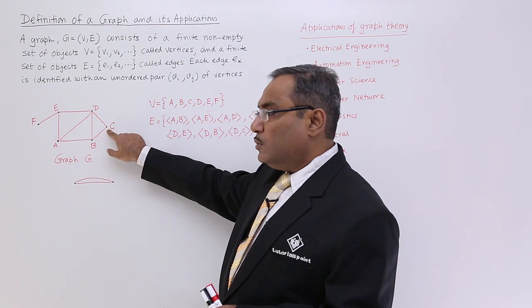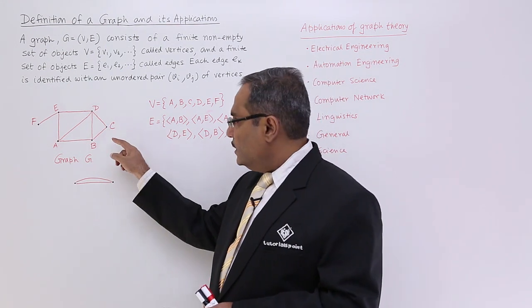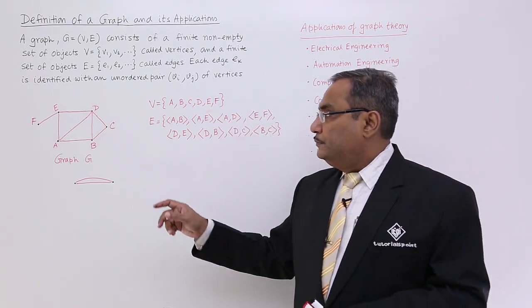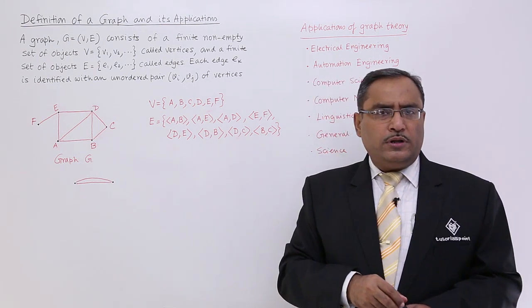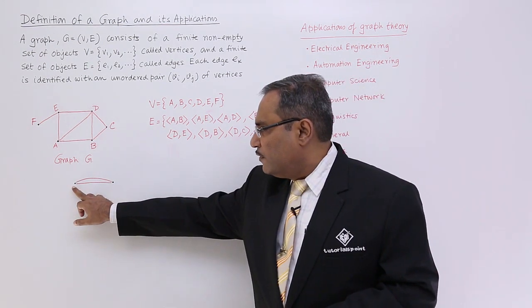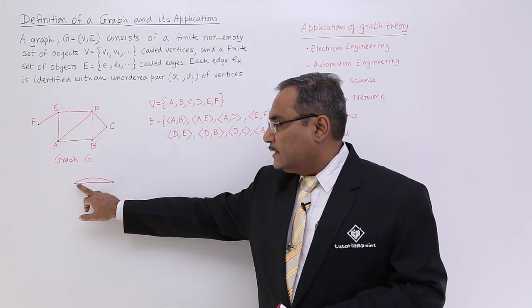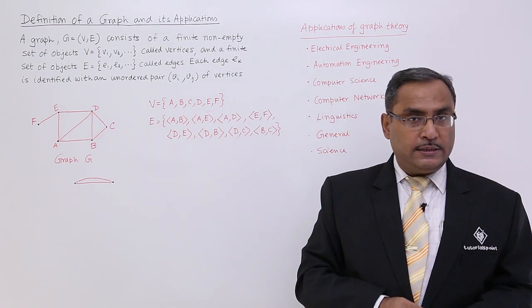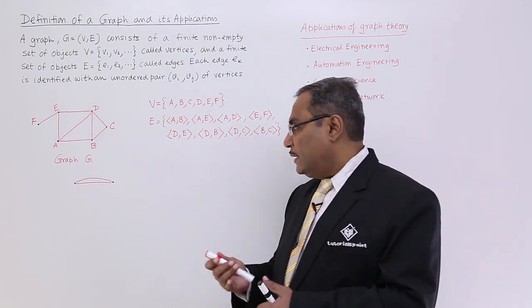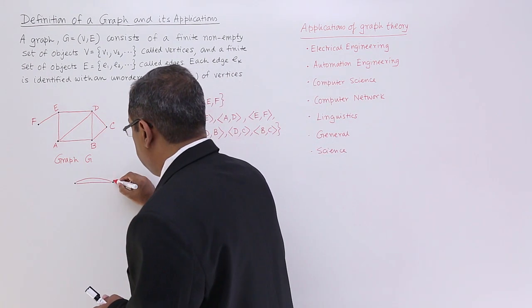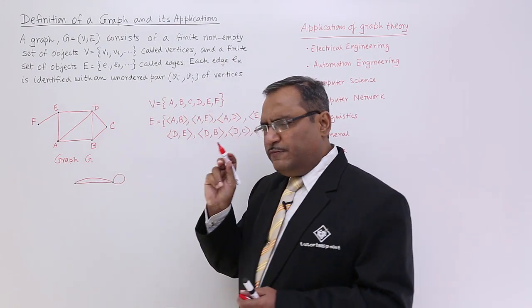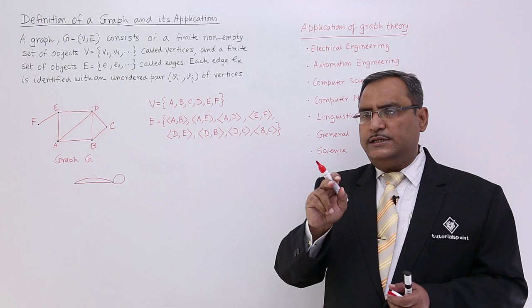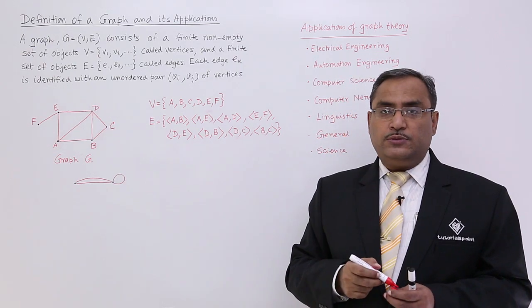So these points are known as the vertices also known as the nodes. These lines will be known as the edges also known as the branches. Now we are having other terminologies like your parallel edge. Let us suppose these are 2 vertices and 2 lines are connecting the same pair of vertices. Then these 2 edges will be known as the parallel edges. We can also have an edge like this one. That means from the same point, same vertex is connected on both ends of this particular edge and this is known as a loop.